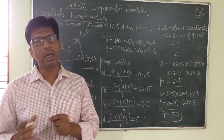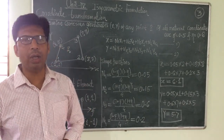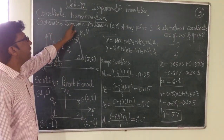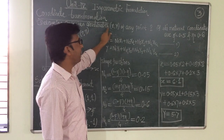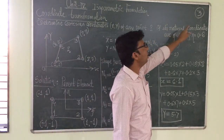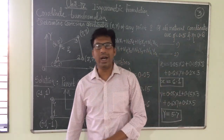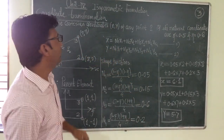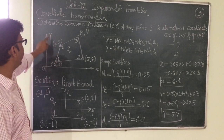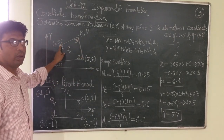In this third lecture we will see how to transfer Cartesian coordinates into natural coordinates or natural coordinates into Cartesian coordinates. We will discuss this with the help of one simple example of a quadrilateral. The question is: determine the Cartesian coordinates (x, y) of any point P if its natural coordinates are xi equal to 0.5 and eta equal to 0.6. The original element is a quadrilateral in the x-y coordinate system with node numbers 1, 2, 3, 4.